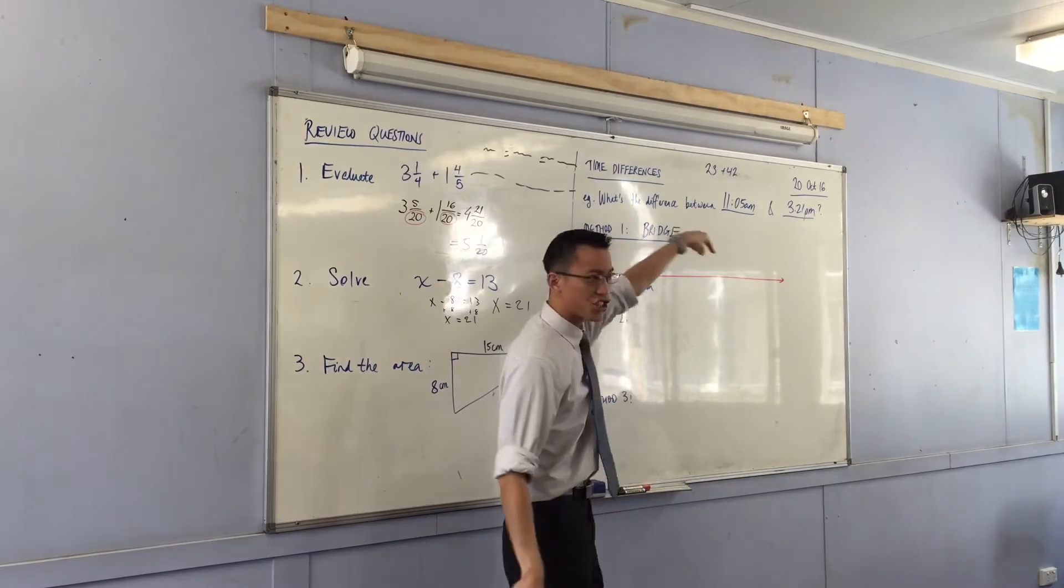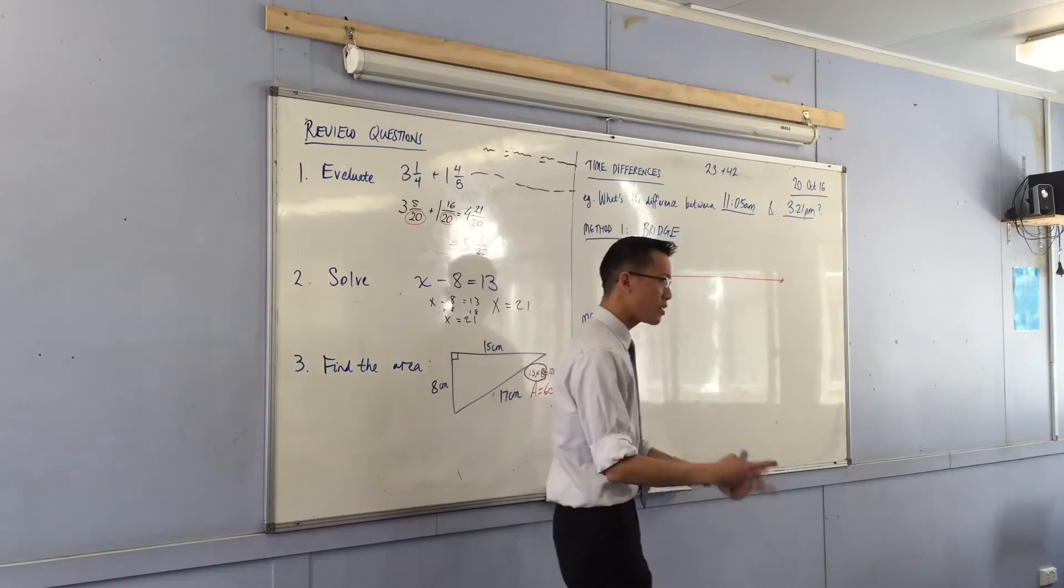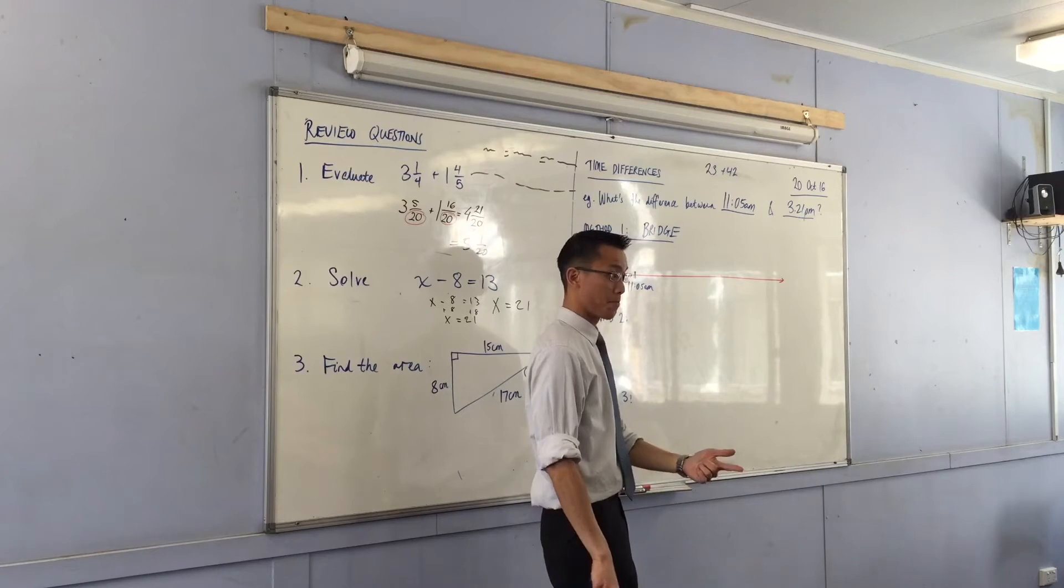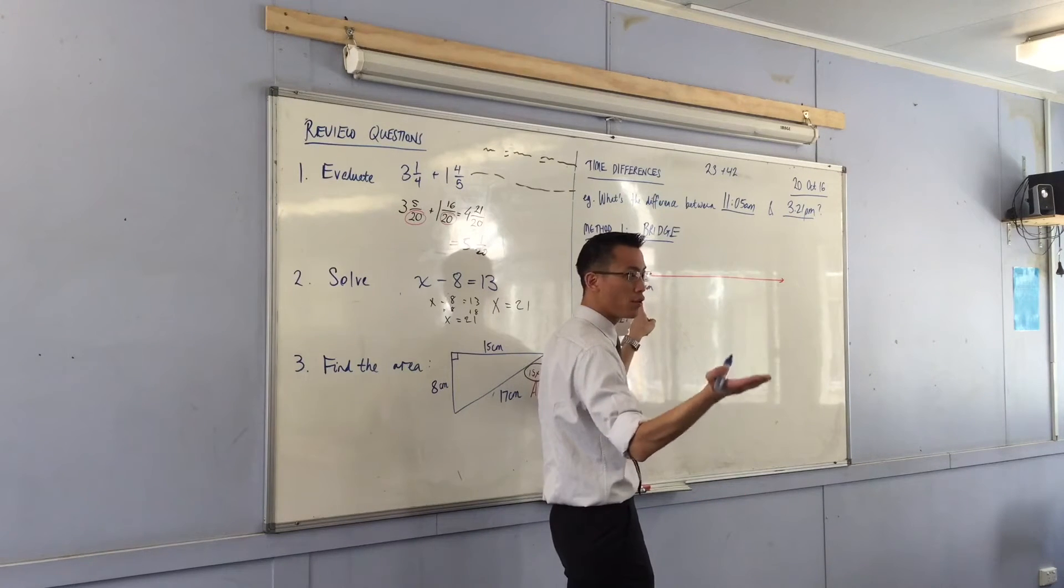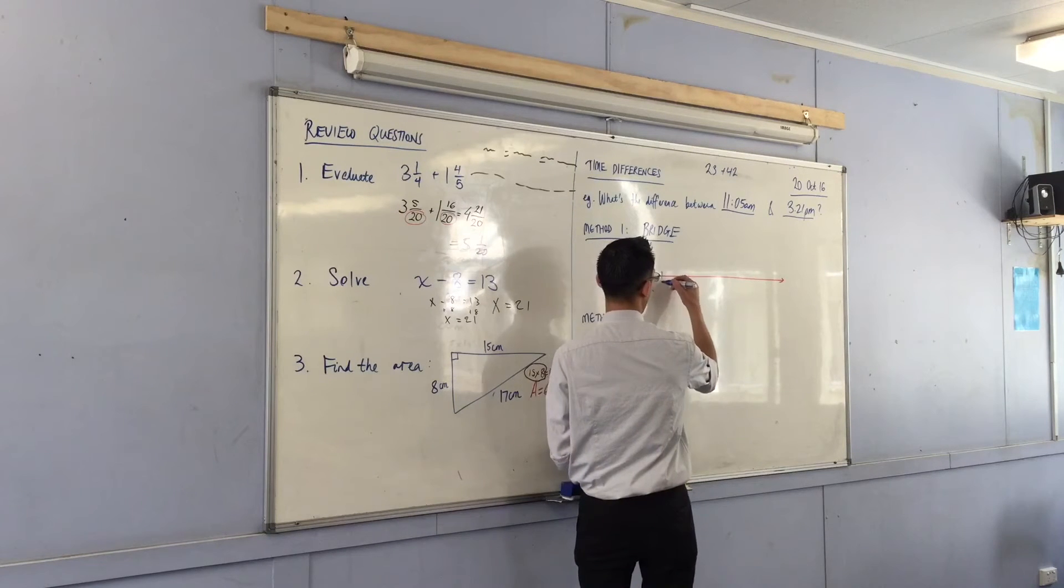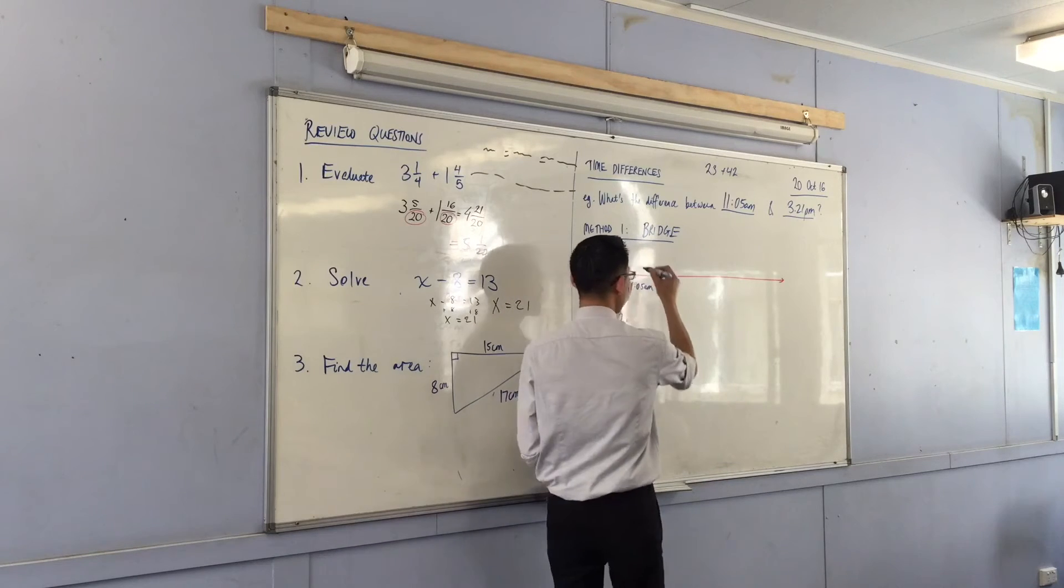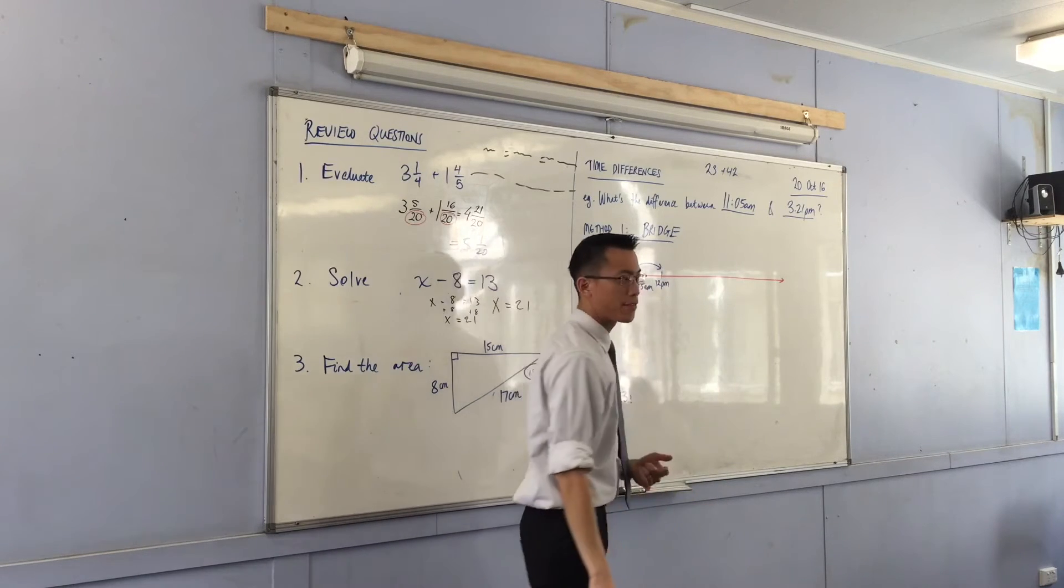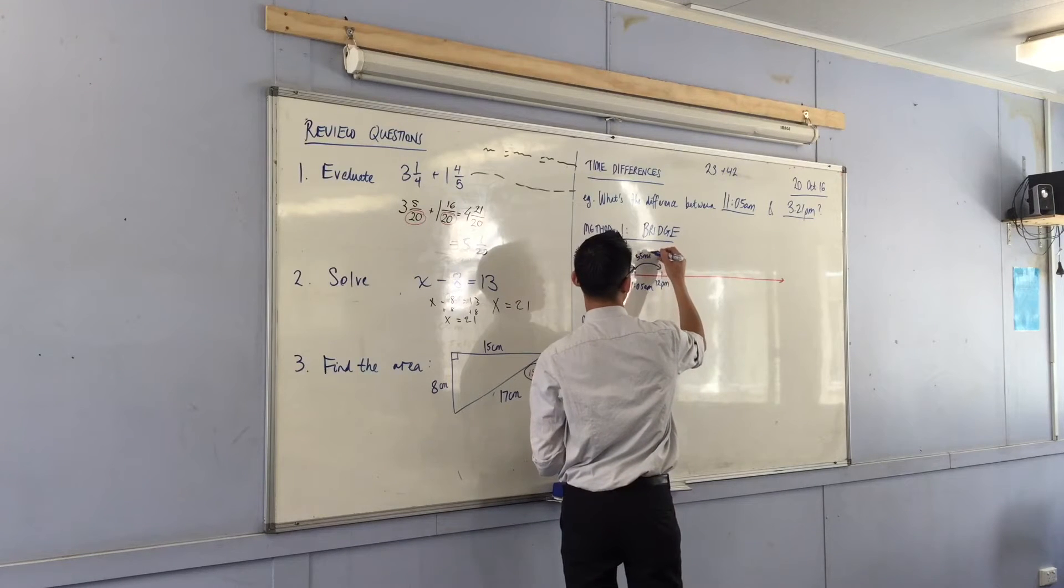So here we're all going to start at 11:05 AM. Please, by the way, say whether you're doing AM, PM, because obviously 11:05 AM, 11:05 PM, very different times. So what I'm going to do is I'm going to bridge to the closest hour. I've got to go forward in time to 3:21, right? So what is the closest hour after this? It's going to be 12 PM, 12 noon. So how many minutes does it take me to get from 11:05 to 12? 55 minutes.